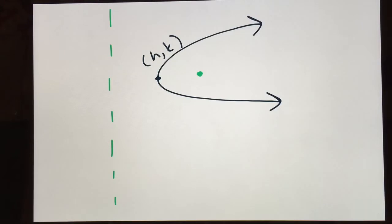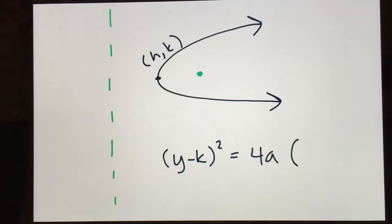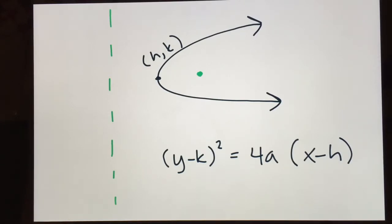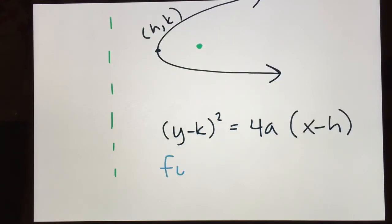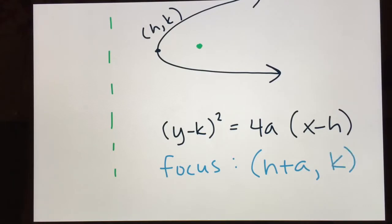Here's a parabola that opens to the right. The equation for this one trades the x and y values — so instead of (x − h)², it's going to be (y − k)², and that's how you know it opens sideways. This would be positive 4a. Your vertex is still (h, k). For the focus, instead of moving up or down, it has moved to the right from the vertex. So the focus has x-coordinate h + a, and the y-coordinate stays the same at k. This distance from vertex to focus is always a length of a.